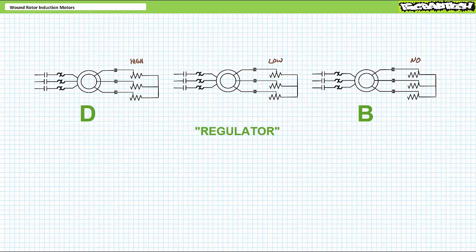This method was commonly employed prior to the advent of inexpensive motor drives — power electronics devices that vary the excitation frequency to control the operational speed of motors. You might find this in older installations necessitating variable speed operation.